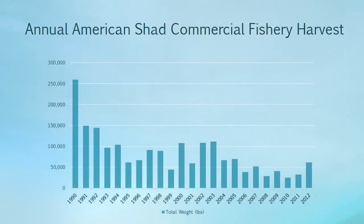American Shad are anadromous fish native to the Atlantic coast of North America. Shad spend most of their lives in marine habitats and return to freshwater to spawn around the age of 4 or 5. Migrating and juvenile shad during and after spring spawning runs are an important component of Connecticut River ecology. Once prominent, shad landings have been in decline over the past 15 years or so, decreasing the economic and cultural importance of the fishery. The declines are even more drastic compared to numbers from the 50s and 60s.